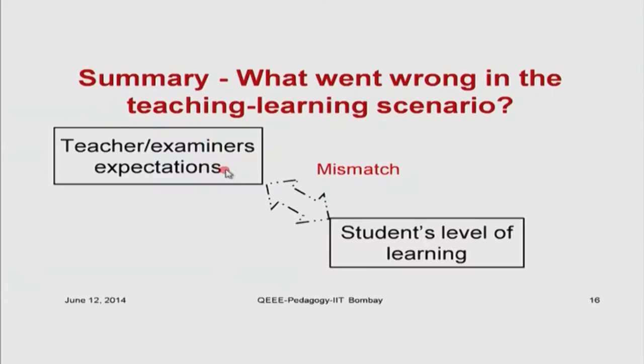We now move to the next part of the session to summarize the activity. The teacher and the exam setters had some expectations, and the students had their own level of learning — there is a mismatch between the two. What we did in this activity was try to arrive at the point of this mismatch. In the next slide, we will try to see how to solve it.